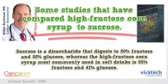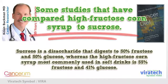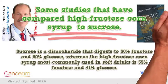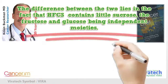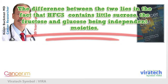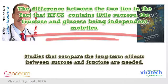Sucrose is a disaccharide that digests to 50 percent fructose and 50 percent glucose, whereas the high fructose corn syrup most commonly used in soft drinks is 55 percent fructose and 41 percent glucose. The key difference is that HFCS contains little sucrose, with fructose and glucose existing as independent moieties. Studies comparing the long-term effects between sucrose and fructose are still needed.